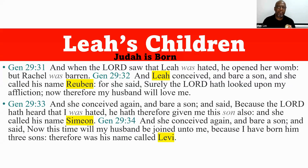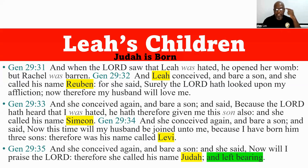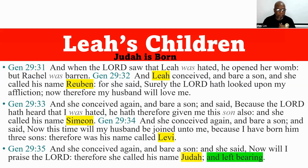Rachel was not having any children, and so Leah was believing that having children was going to bring the husband to her, and she kept trying. And she conceived again and bore a son, and she said, 'I will praise the Lord,' and therefore she called his name Judah. And she stopped having children. You notice that the first three children she had, she had them with the focus of Jacob on her mind. But when she had Judah, she says, 'I will praise the Lord.' It went back to her and God.